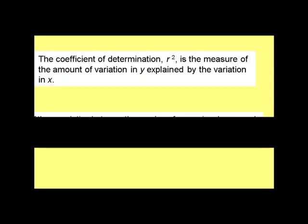Before we go too much further, I also want to talk about what's called the coefficient of determination. In shorthand, this is known as R squared. It's the measure of amount of variation in Y explained by the variation in X.